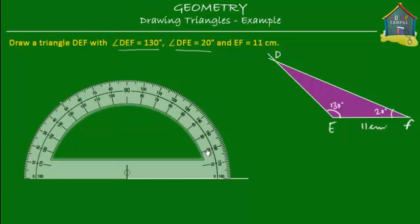So 0, 10, 20, 30, 40, 50, 60, 70, 80, 90, 100, 110, 120, 130. So this is 130, so I start at E. Actually I forgot to label this, this is E and this is F, and this is 11 centimeters.